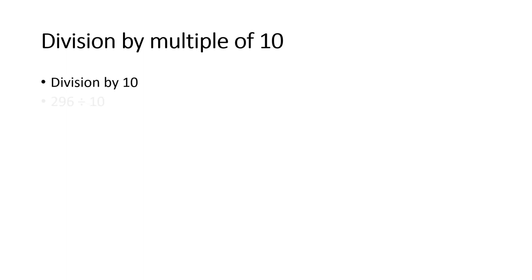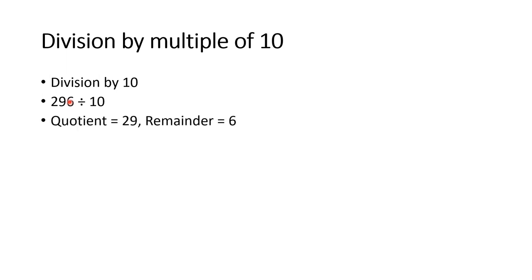Let us discuss division by multiples of 10. I am going to tell you a direct method to find the quotient and remainder for any division involving a multiple of 10. For division by 10: take 296 divided by 10. Since there is 1 zero in 10, we hide the last 1 digit. The remaining number is 29, which is the quotient, and the hidden digit 6 is the remainder. So quotient = 29, remainder = 6.